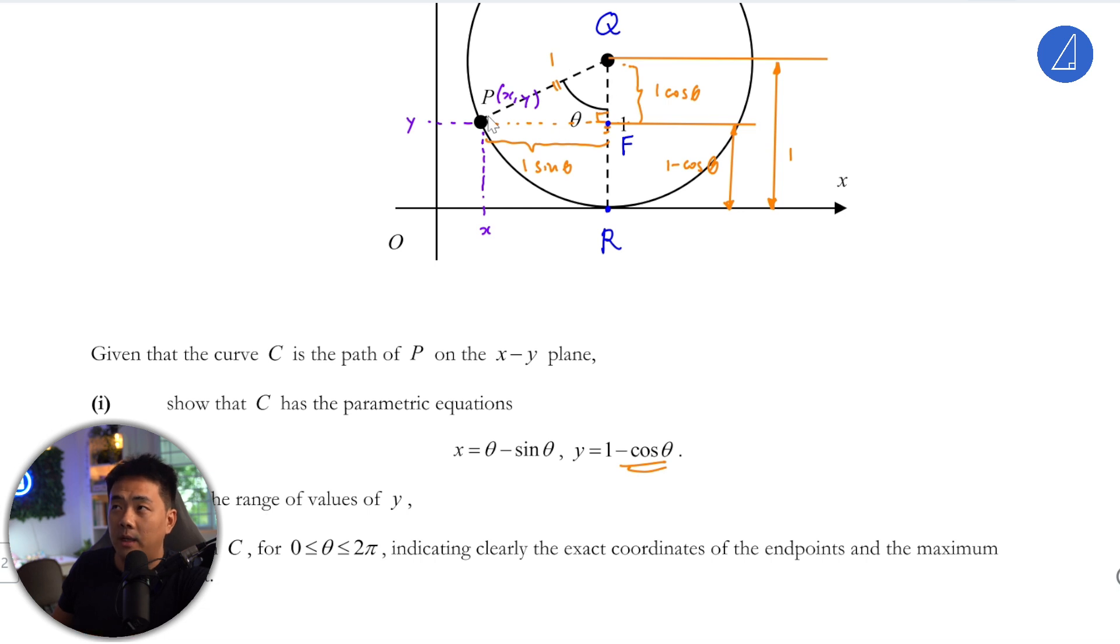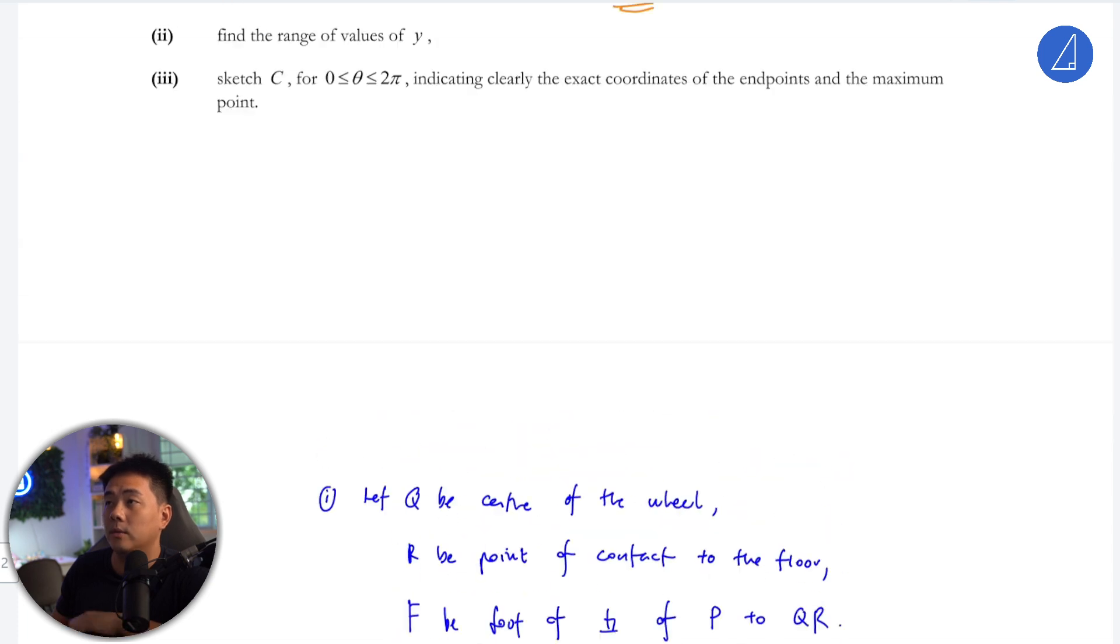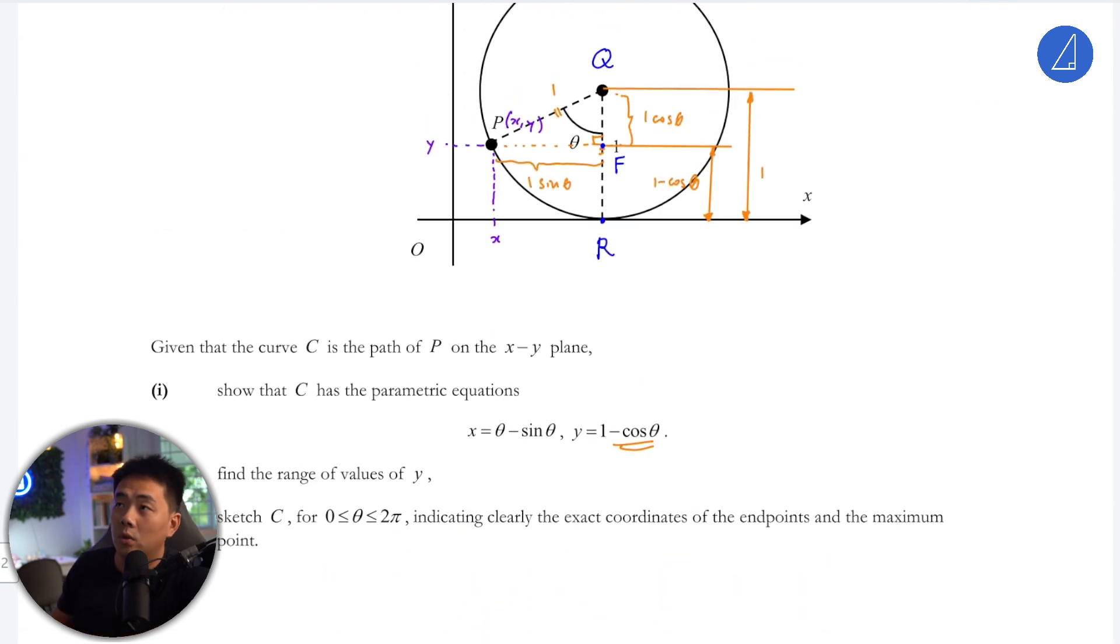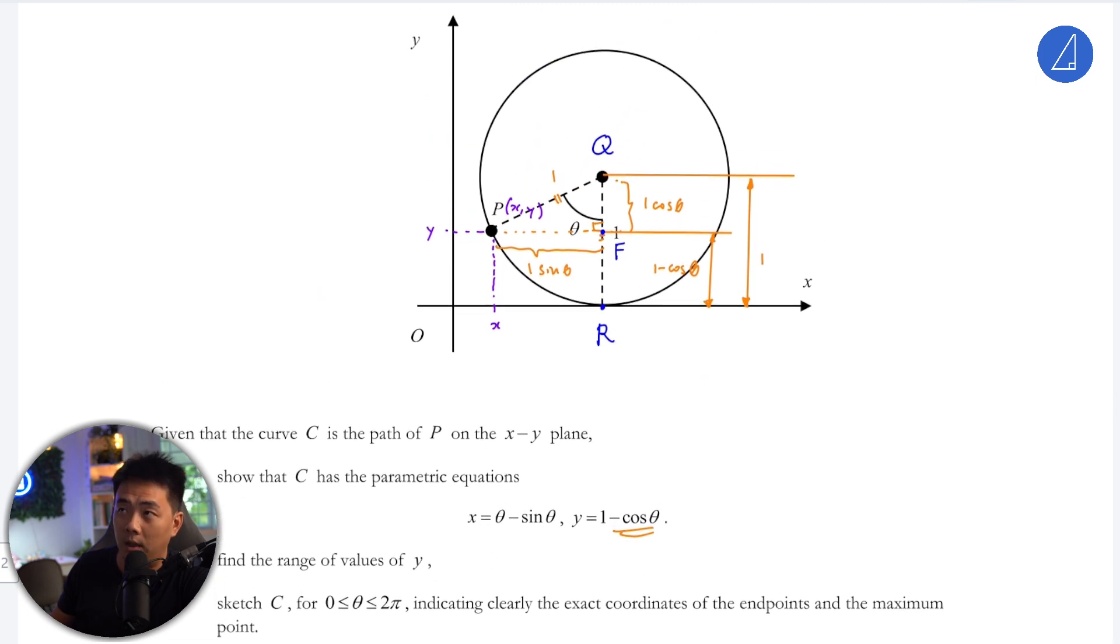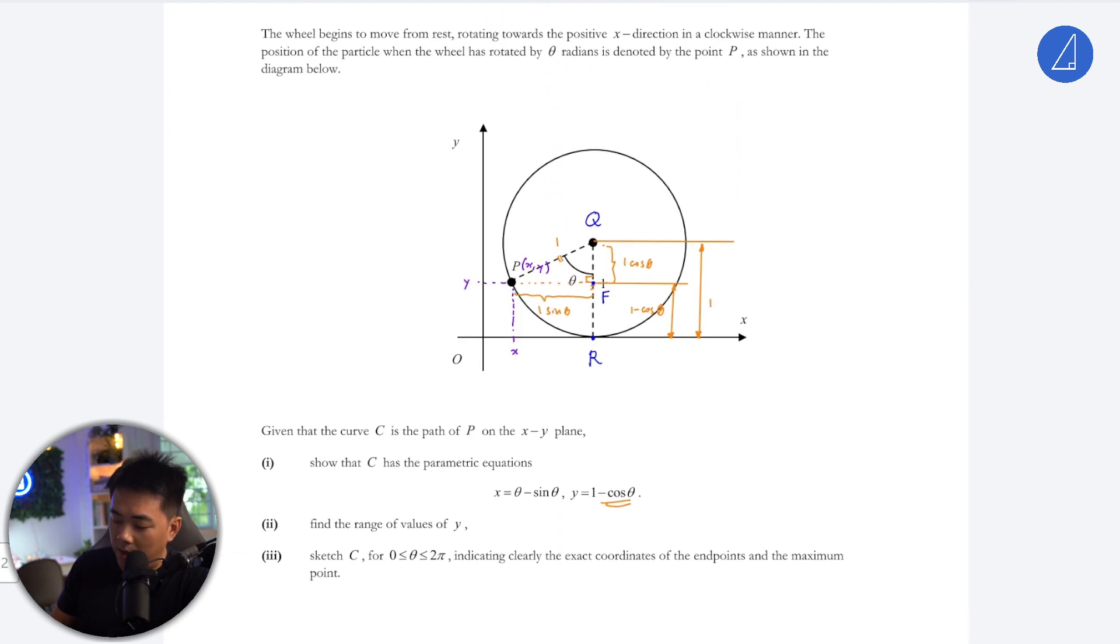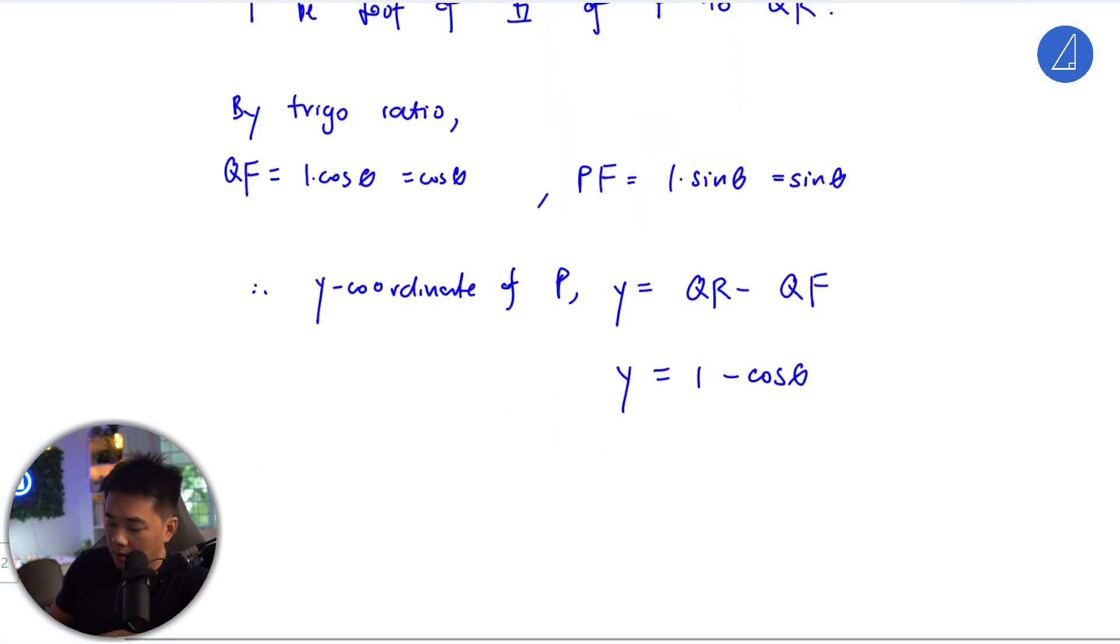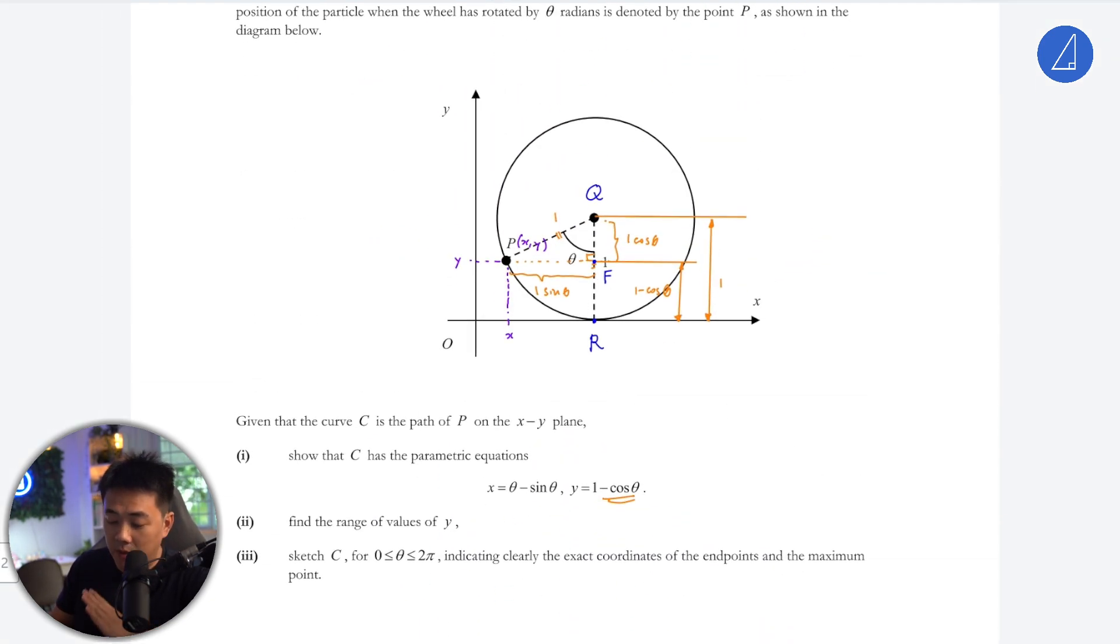So by using Pythagoras theorem, we can find QF is 1 cos θ, and PF is actually 1 sin θ by trig ratio. So I label everything already. So now we know that the y. Hence, y coordinate is equal to QR minus QF. So this is the parametric equation for y. Now let's look at the parametric equation for x.